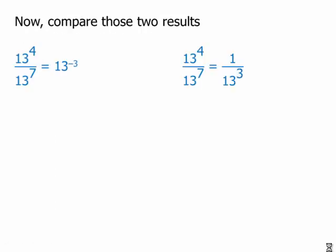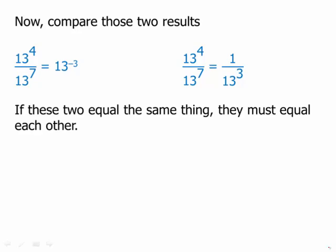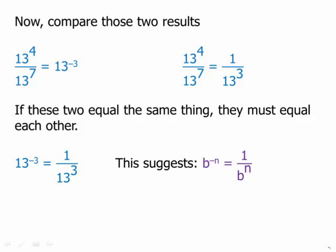Now compare those two results. One way of thinking about it we got 13 to the negative 3. Another way of thinking about it we got 1 over 13 cubed. If these two equal the same thing they must equal each other. This suggests that b to the negative n equals 1 over b to the n. That is the exponent rule for negative exponents.